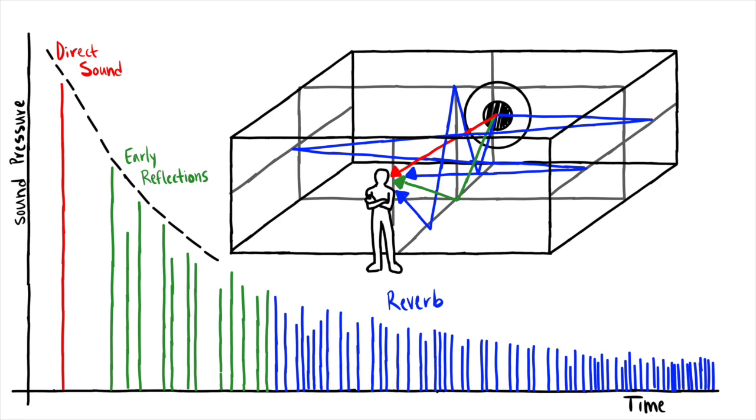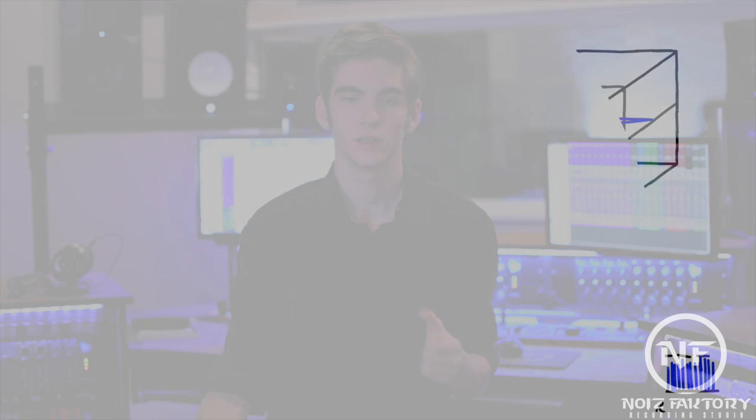With these three categories in mind, let's dive into the fundamental styles of mic placement according to distance. Here are some great starting points — super basic mic placements for generic instruments. Each position generates a different result that affects the sound's direct path, early reflection, and reverberation.